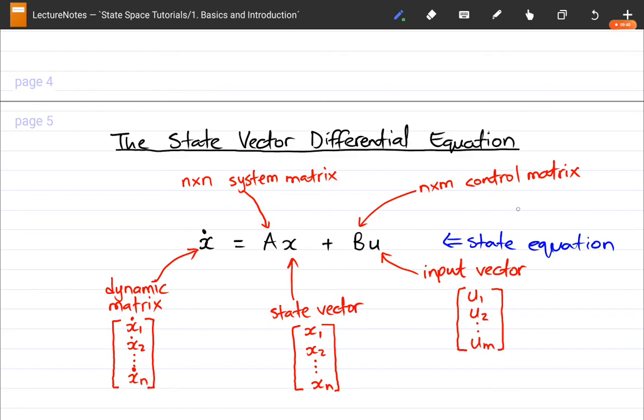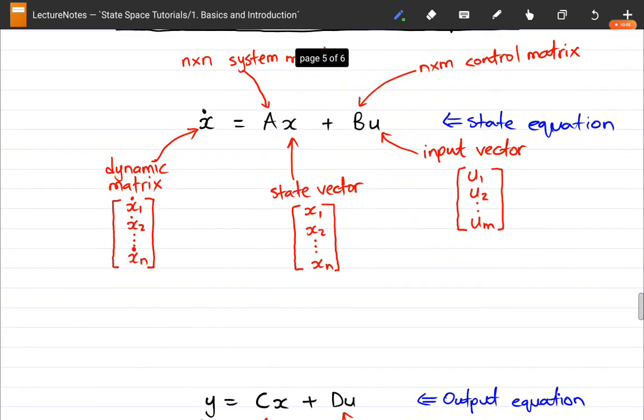Bu is the n by m control matrix. This will be discussed a bit later. I don't want to bloat the whole lecture with this now. And u is the input matrix. So for the state equation, we are talking about the dynamic matrix linking with the state vector, the system matrix, and your input matrix. So hopefully this will make a bit more sense when we start looking at examples.